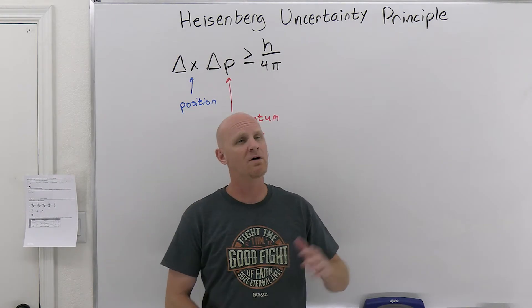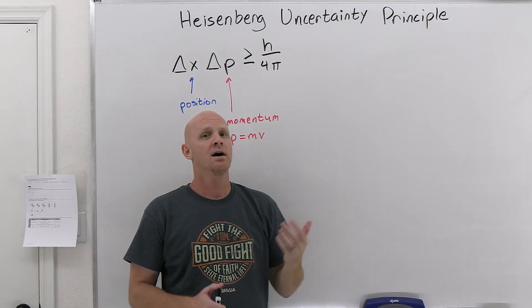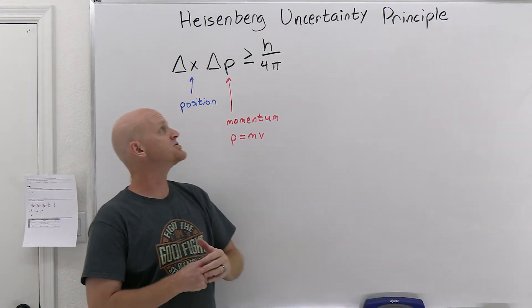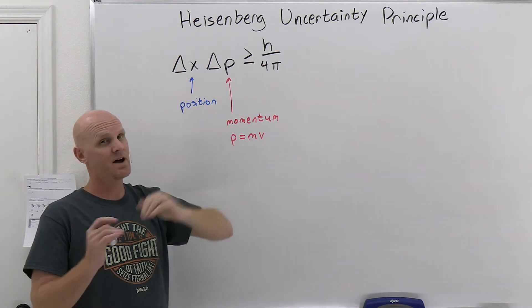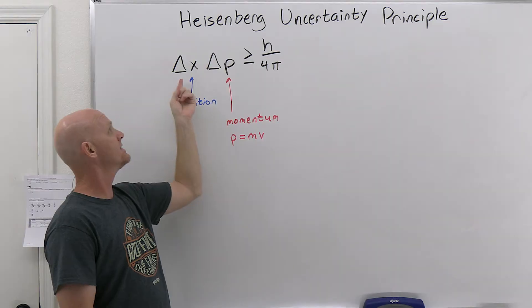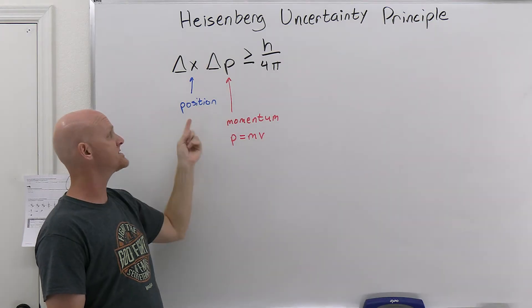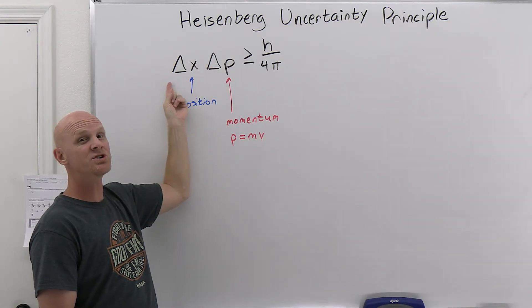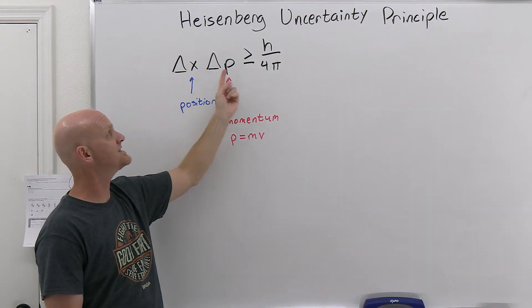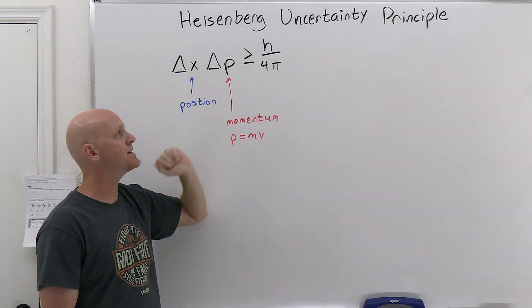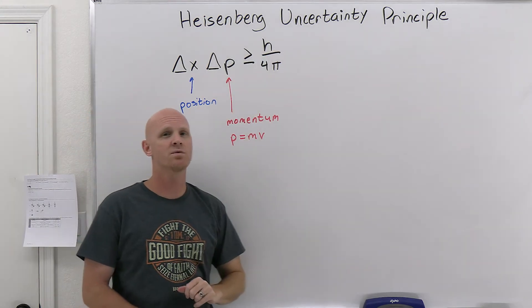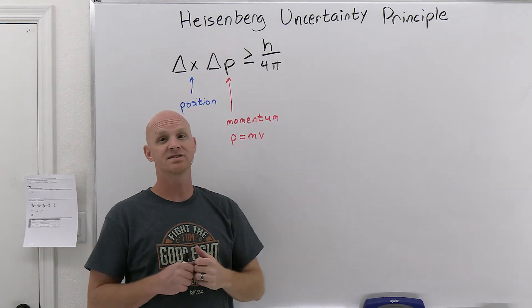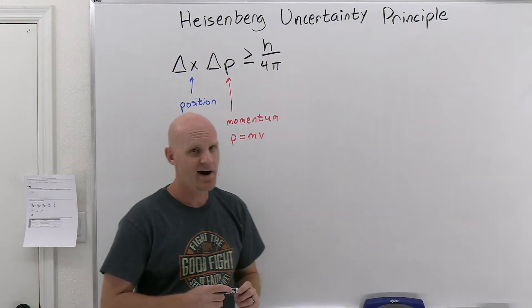So now we're going to talk about the Heisenberg uncertainty principle. And ultimately what Mr. Heisenberg's uncertainty principle says is that the uncertainty in an object, the object we're talking about here is electrons typically, but the uncertainty in electrons position, X stands position. So delta here stands for uncertainty, the uncertainty in the position times the uncertainty in its momentum, P here stands for momentum, is greater than or equal to a constant, in this case, H over four pi, or sometimes expressed as H bar over two, if you care, and you probably don't.